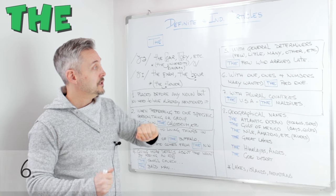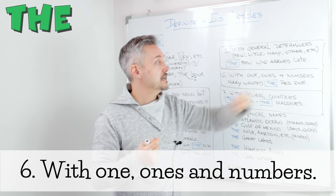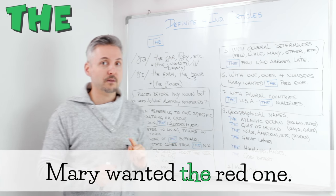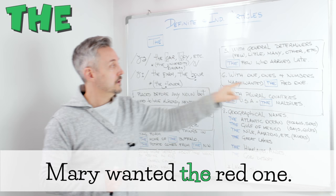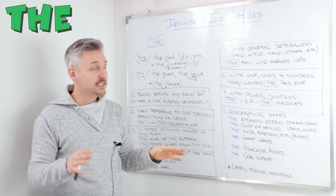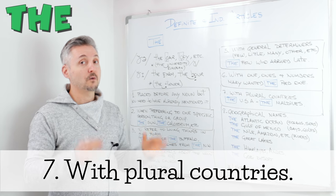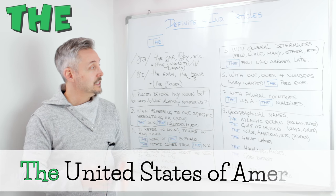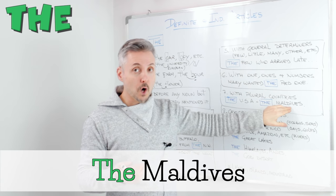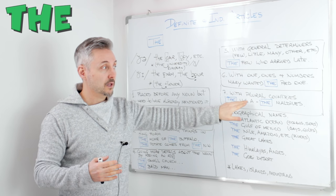Number six: with 'one', 'ones', and numbers. 'Mary wanted the red one.' Number seven: with plural countries. 'The United States of America', 'the Maldives', etc. So, with plural countries.